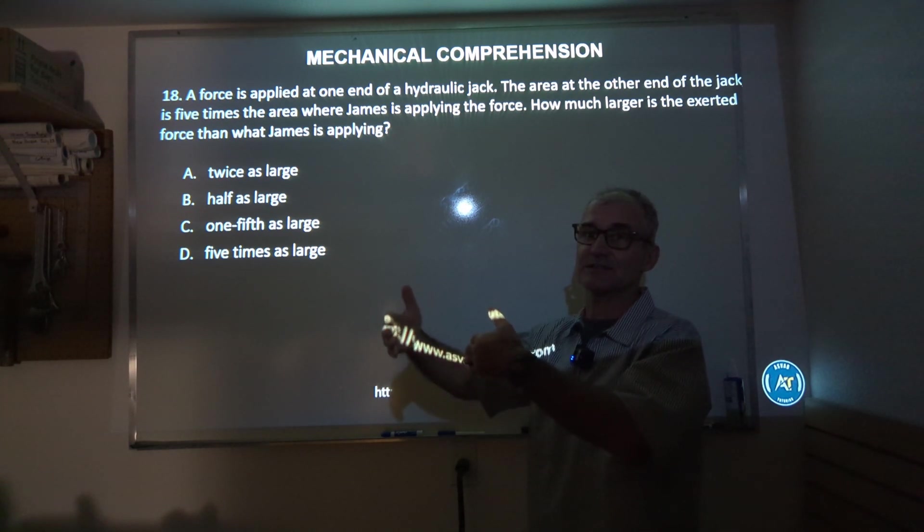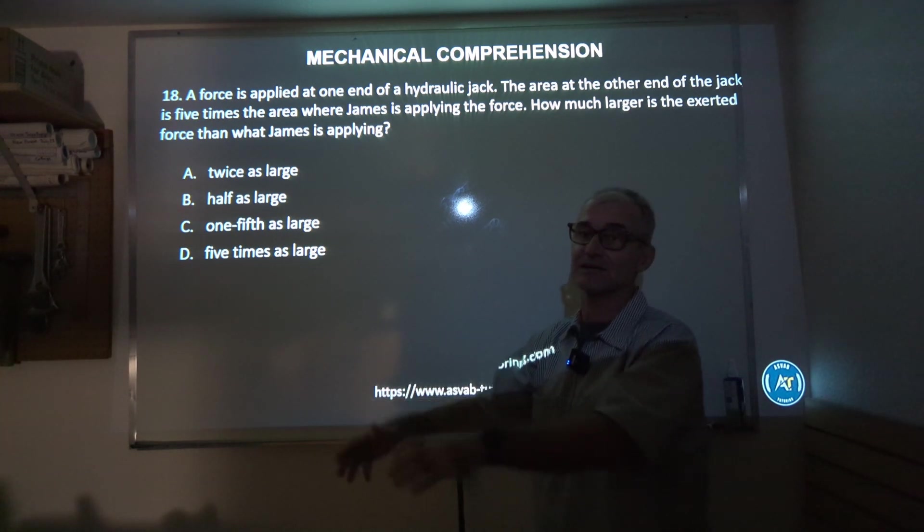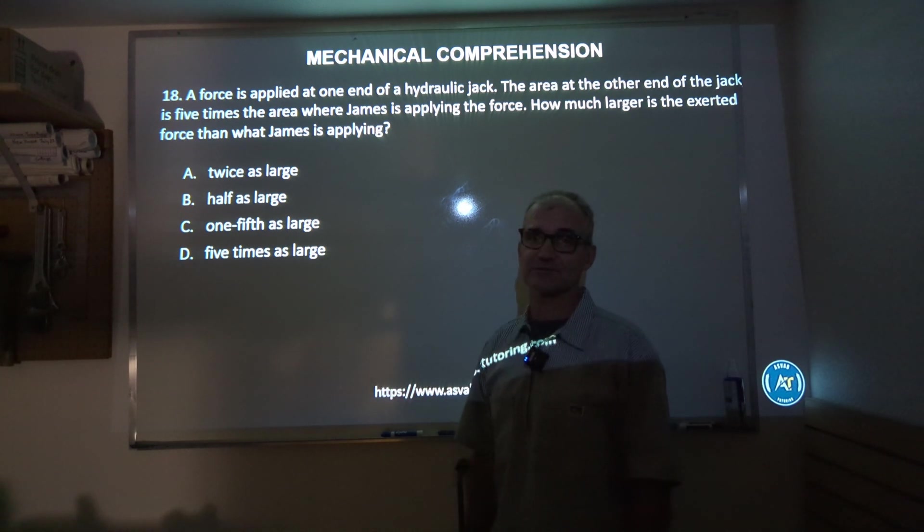The way I look at a lot of mechanical advantage problems is figure out how much force you're putting into it, how much travel you're going to make, and then how much the receiver is going to make. So if it travels one-fifth, then you're putting that same force into a fifth of the amount of travel, or five times as much force. Correct answer is answer D, five times as large.